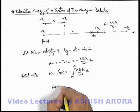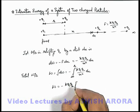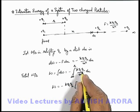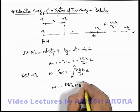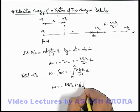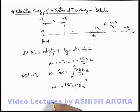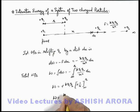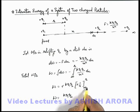The work done will be minus kq1q2, and integrating 1 by x squared gives minus 1 by x. Substituting the limits from infinity to r and cancelling the minus signs, the work done is kq1q2 times (1 by r minus 1 by infinity). Ignoring the second term, this gives kq1q2 by r.